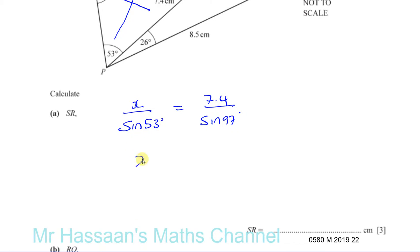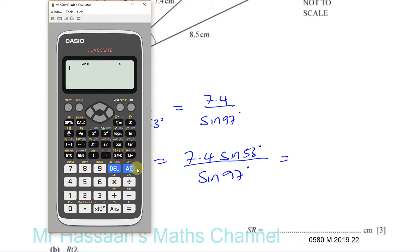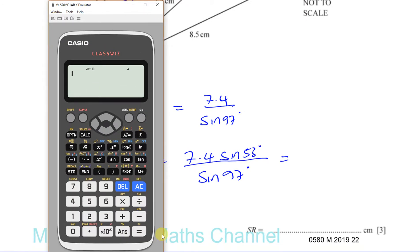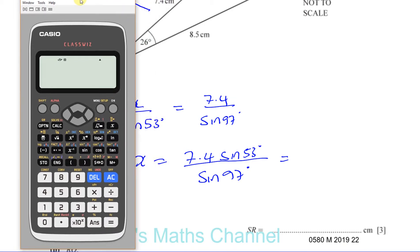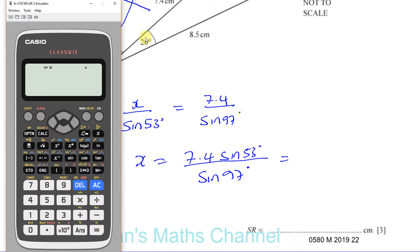So then I can say X is equal to 7.4 times sine 53 degrees divided by sine 97. I don't actually calculate what they are until the last step so that I don't lose accuracy in my answers. Now I've got to make sure that my calculator is in degree mode because our angles are given in degrees here, so we have to use degrees.